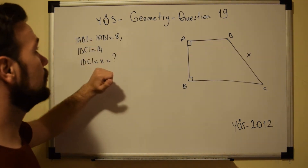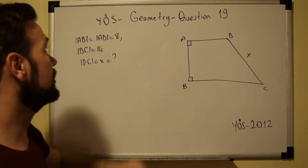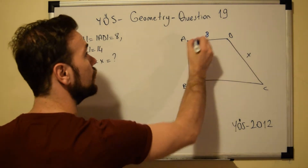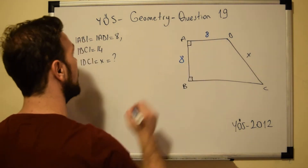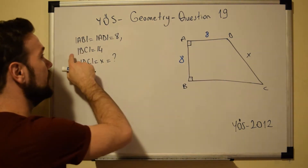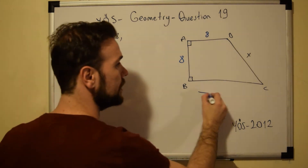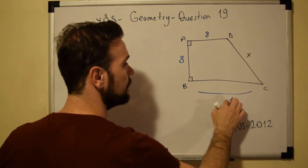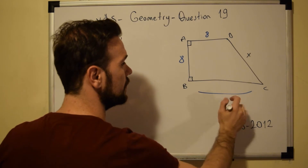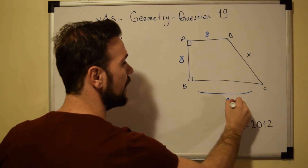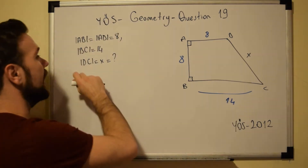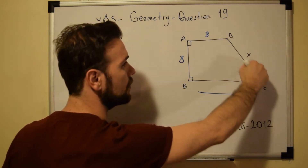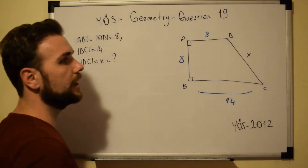We have AB which is equal to AD, both equal to 8. We have BC which is equal to 14, and DC is equal to X. We have to find the value of DC, or X.